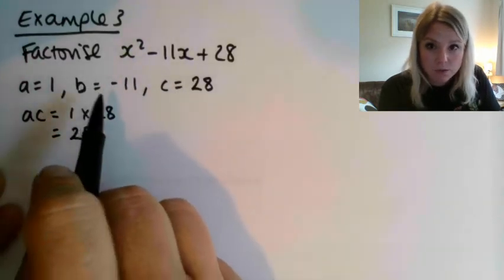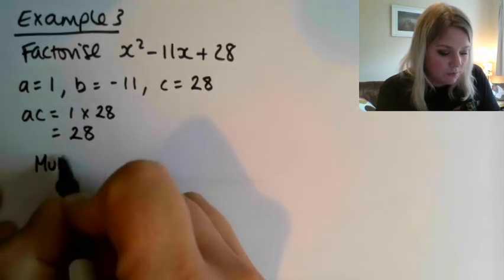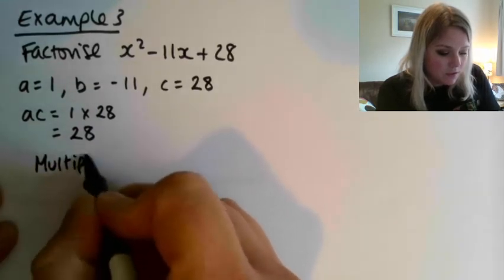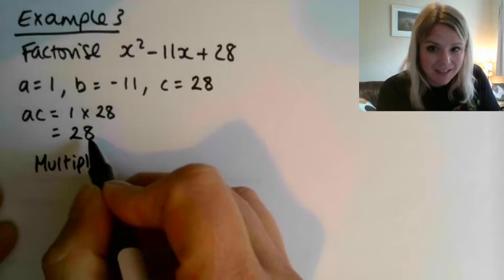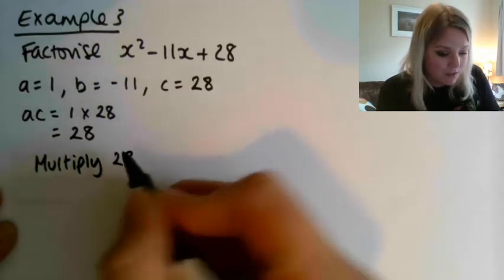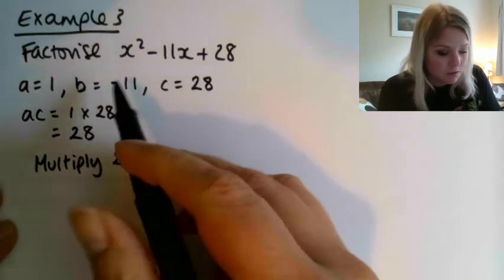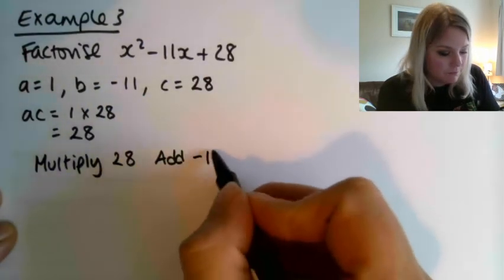We need to also make sure we're using the b value, and the way that we do that is we're looking for two numbers that multiply to give us this ac value. So they're multiplying to give us, in this case, 28, and then they have to add together to give the b value, which in this case is minus 11.